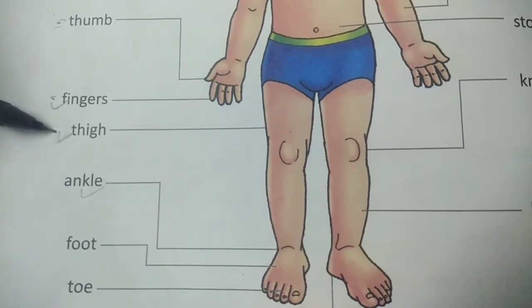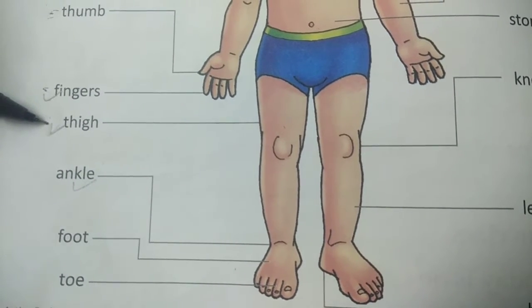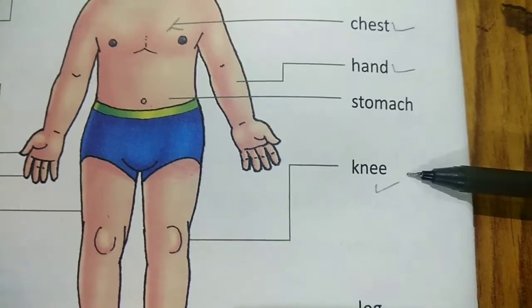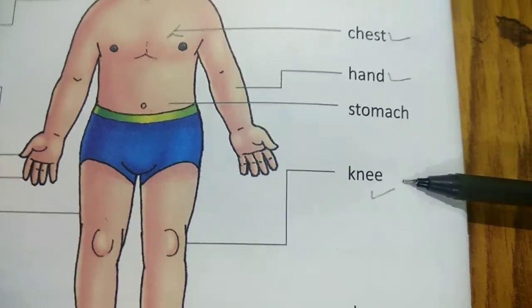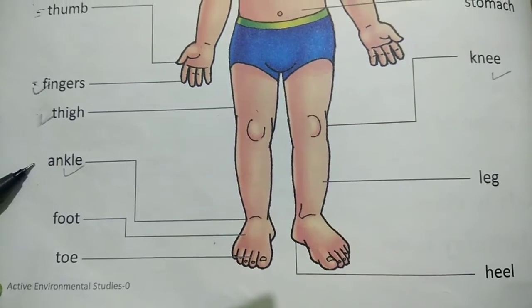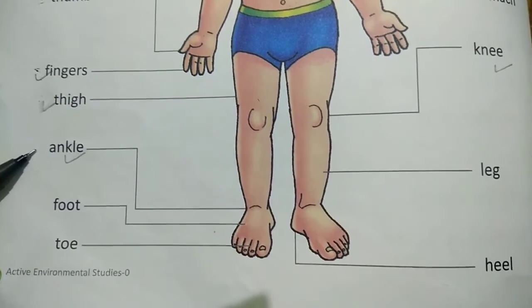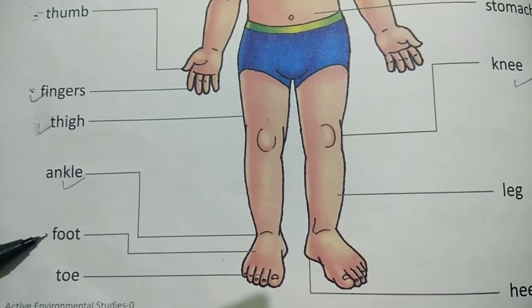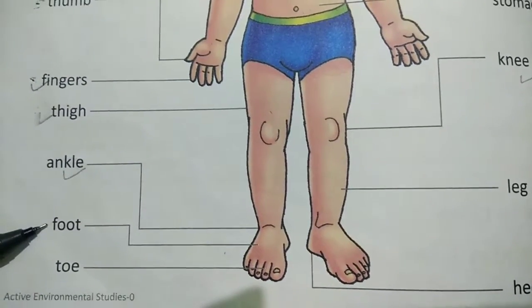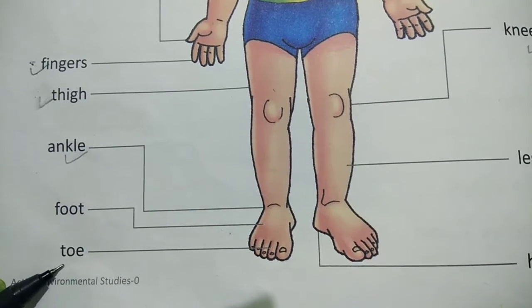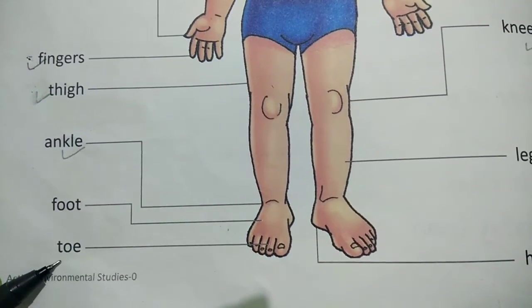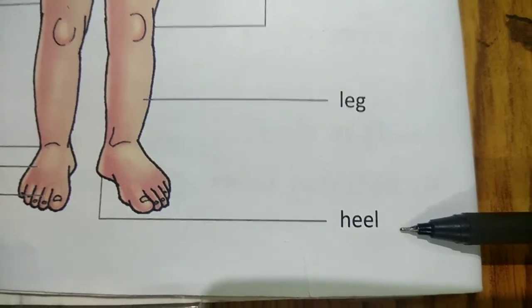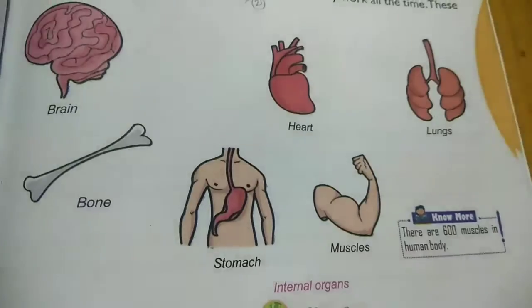Thigh: the part of the human leg between the hip and the knee. Knee: the joint between the thigh and the lower leg in humans. Ankle: the joint connecting the foot with the leg. Foot: the part of the body below the ankle used for standing and walking. Toe: any of the five digits at the end of the human foot. Heel: part of the back side of a human foot below the ankle.